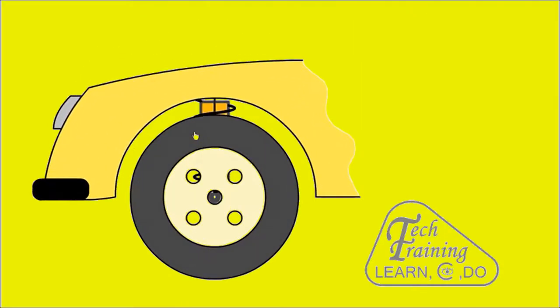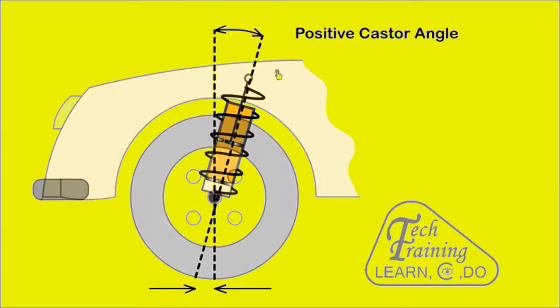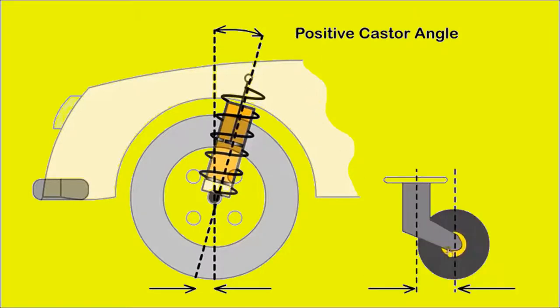Caster is the angle between a line extending through the steering pivot axis and a vertical line through the centre of the wheel. The steering pivot axis meets the road in front of the wheel contact point. It will result in the wheel tendency to travel in a straight line. With a trolley, the wheel is always parallel to the direction in which the trolley is pushed. Most cars use a positive caster.